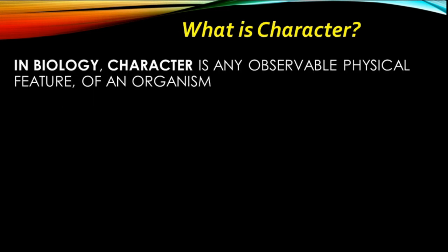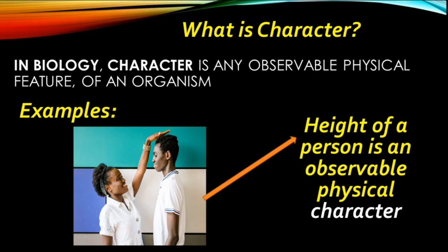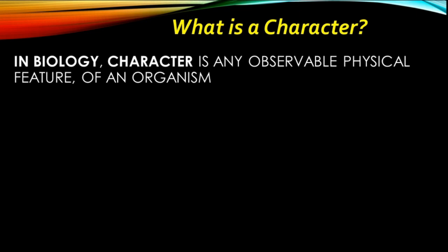Look at this picture. In picture one, a lady is measuring the height of an individual. Here, height is the character the lady is trying to observe. In other words, the height of the person is an observable physical feature. We can say height is an observable physical character, and we can correlate height to the character of this individual.